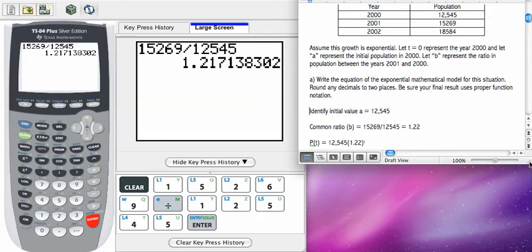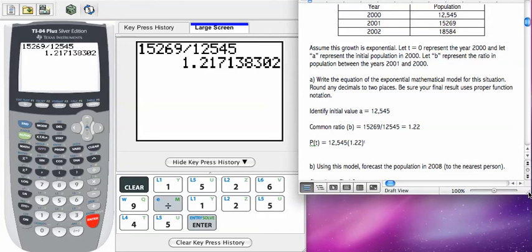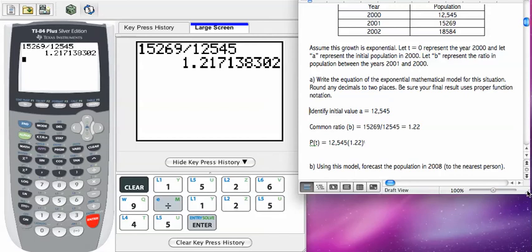Let's take a look at part B for this question. Part B says, using this model, forecast the population in the year 2008. So the year 2008 is not listed on our table, so we're using our model to help us understand what the population was.